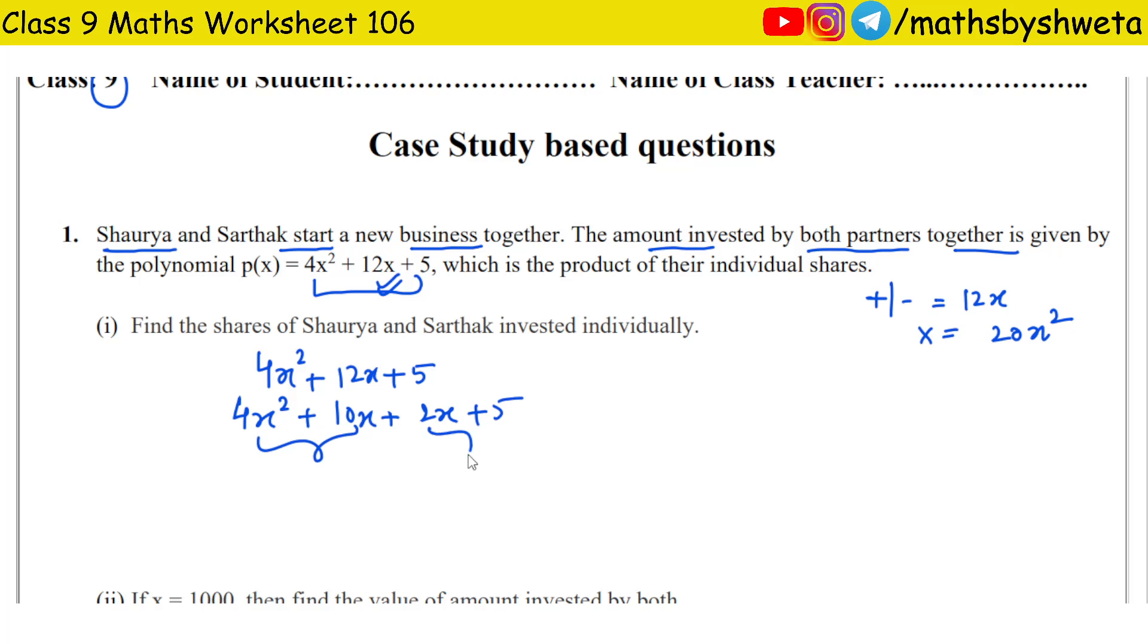So 4x² + 10x + 2x + 5. Here I take 2x common, so 2x(2x + 5). Here I take 1 common, then 1(2x + 5). So there is (2x + 5), and then (2x + 1).